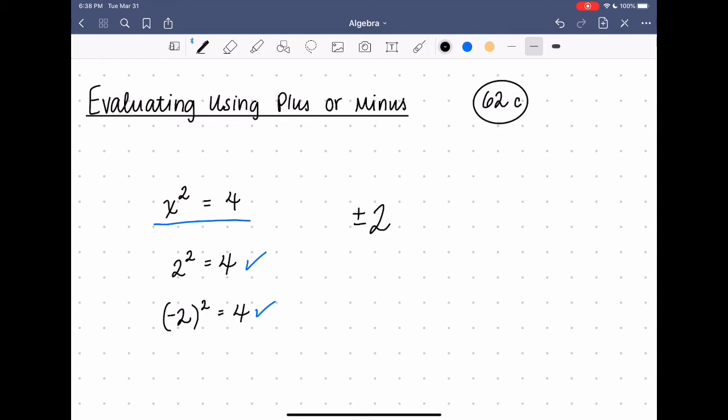And we can also read that as plus or minus 2. Because the answer could be positive 2 or it could be negative 2. We don't know what x is, but it's one or the other. Both are correct.